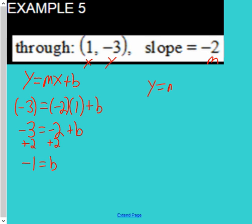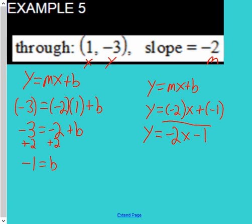So we have y equals mx plus b again. We're only substituting the slope and the y-intercept. The y equals, when we clean it up, negative 2x minus 1.